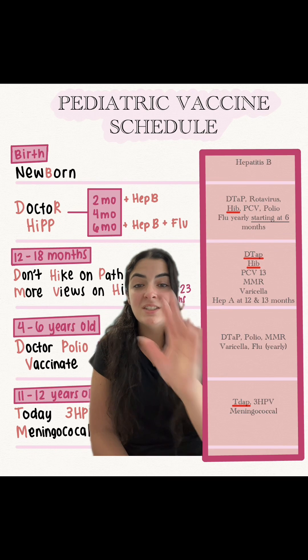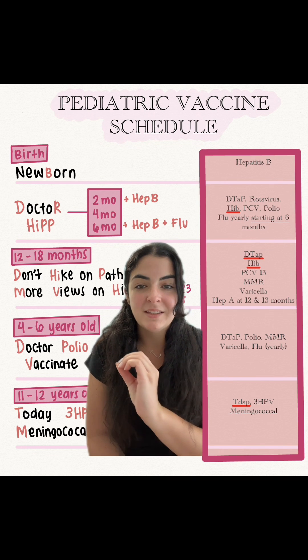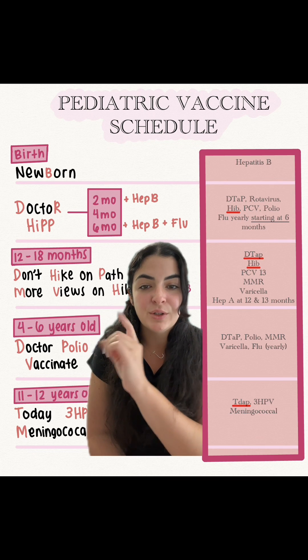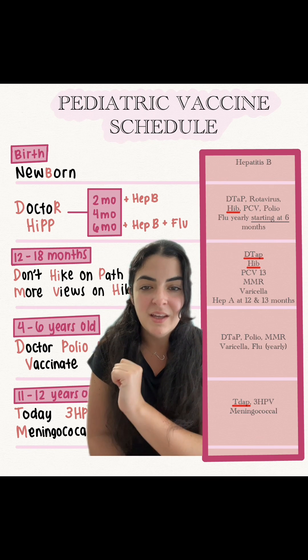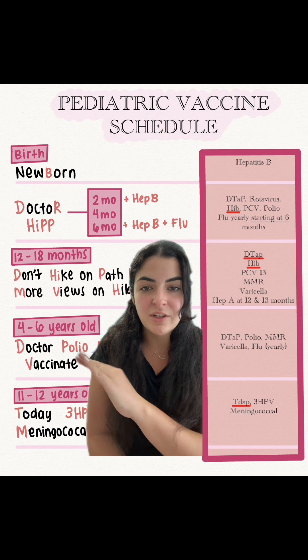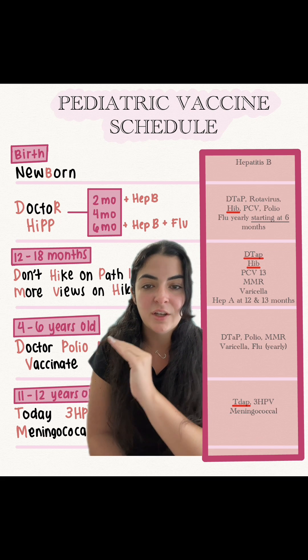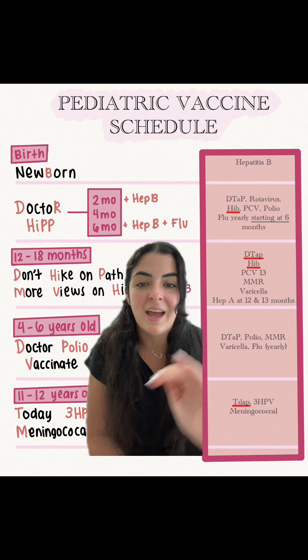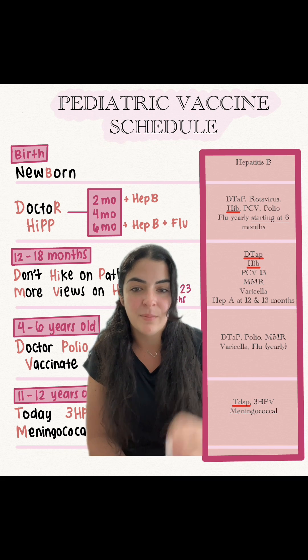In addition to those Dr. HIP vaccines: at 2 months, you're also going to give hepatitis B; at 4 months, you're just giving Dr. HIP; and at 6 months, you're giving Dr. HIP plus hep B. You can also start giving flu at 6 months.